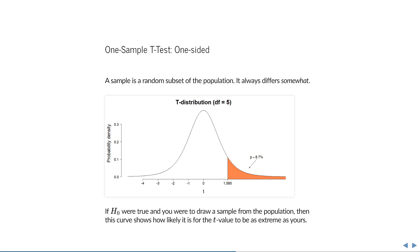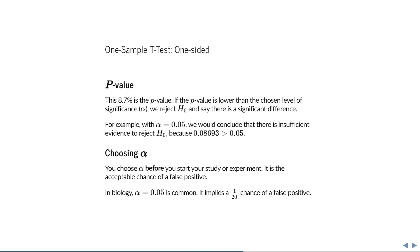Remember that a sample is a random subset of the population, and therefore it will always differ somewhat in its sample mean from the population. So if the null hypothesis were true and you were to draw a sample from the population, then this curve shows how likely it is for the t-value to be as extreme as yours. This 8.7% is the p-value, and if this p-value is lower than the chosen level of significance alpha, then we reject the null hypothesis and say that there is a significant difference. For example, with alpha equal to 0.05, we would conclude that there is insufficient evidence to reject the null hypothesis because our p-value is larger than 0.05.